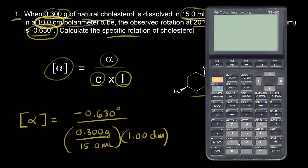Let's use the calculator to solve for the specific rotation. That would be negative 0.630 divided by (0.300 divided by 15.0), multiplied by 1.00. And we get negative 31.5 — that is our specific rotation.